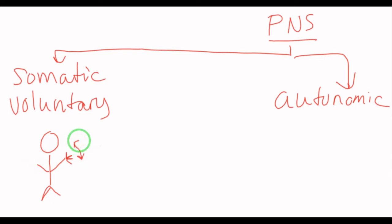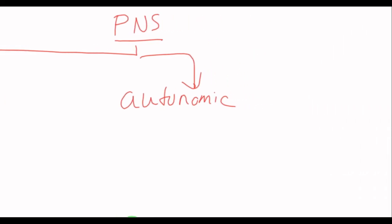The autonomic nervous system is going to control automatic features of your body. So, I think of autonomic as automatic.